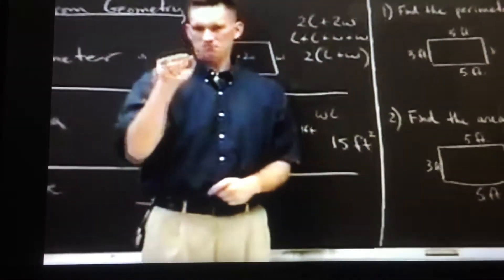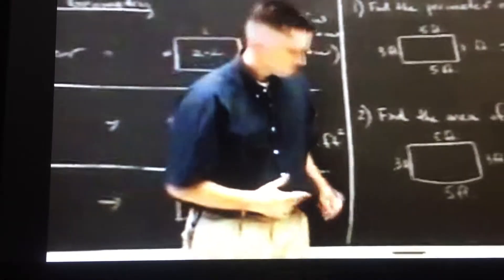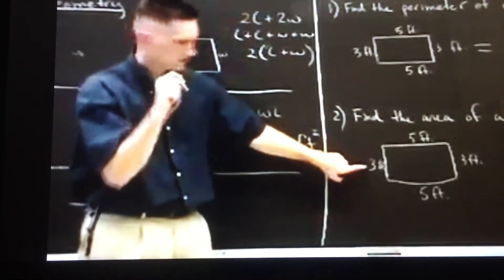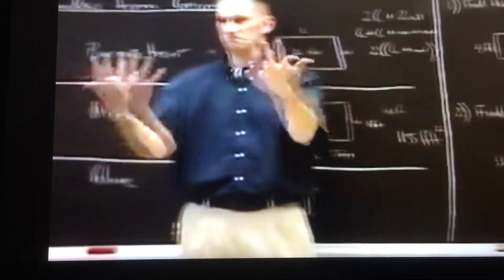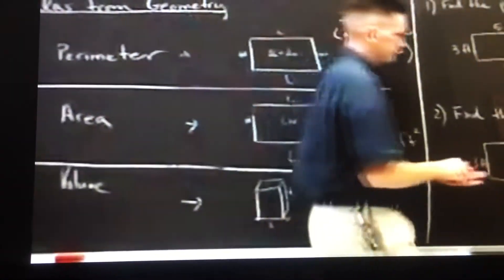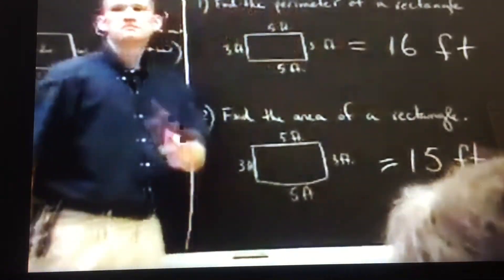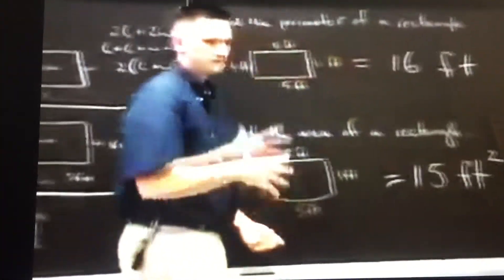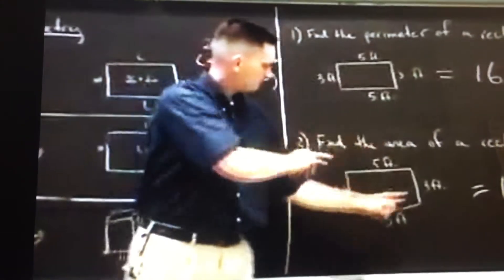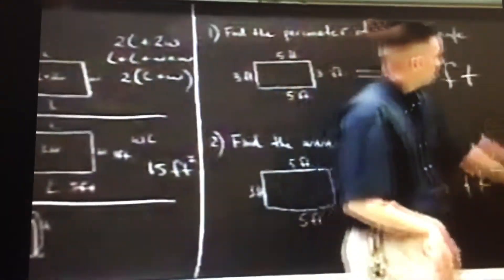Now how about the area for this rectangle? 3 feet by 5 feet. Multiply them together. You get 15. Thank you. Yes. Squared. Because there's two sides of each.